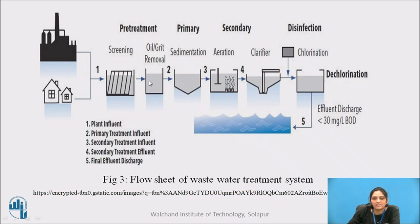Sewage has all types of impurities — it has oil, grease, soap, and some grit. They are removed in the second unit called the grit chamber. Grease and oil float on the water and grit particles settle down at the bottom. So from the top, oil and grease are removed, and from the bottom, grit particles are removed.